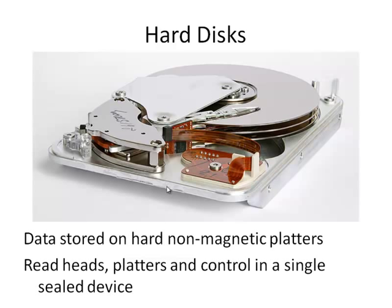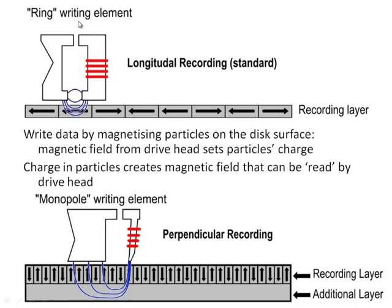Here we can see the disk head — this tiny device — floating just a minuscule distance above the surface without touching it. There are two key recording methods: longitudinal or perpendicular. In longitudinal recording, the bits are aligned along the surface and the magnetic field flows along the surface. Perpendicular recording aligns the magnetic charge vertically, which allows more data to be packed into a smaller area. It's a more recent innovation, though it does require a stronger current.